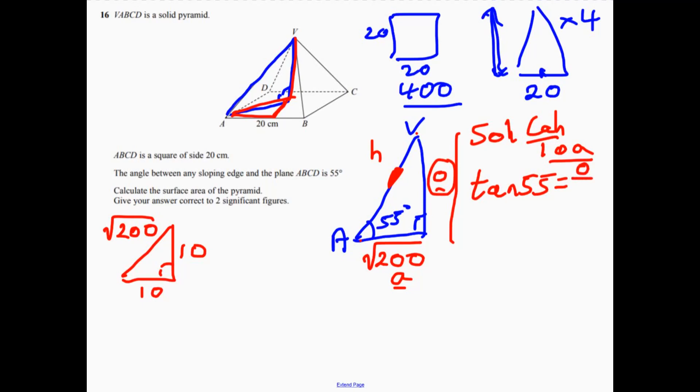So we can say that tan 55 is equal to the thing that I'm trying to work out, the opposite side, over root 200. So that side I want, let's call that x. And that's going to equal root 200 times tan 55. Now, I'm actually just going to leave it like that for a second. If you want to work it out and store it in your calculator, obviously you can do it. But we've got that length there.